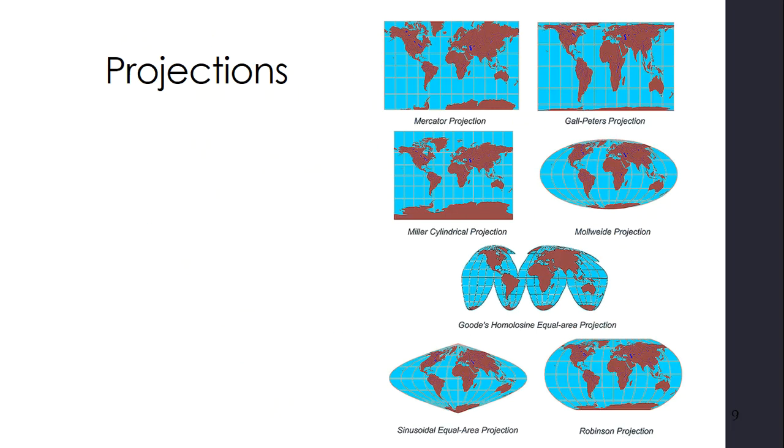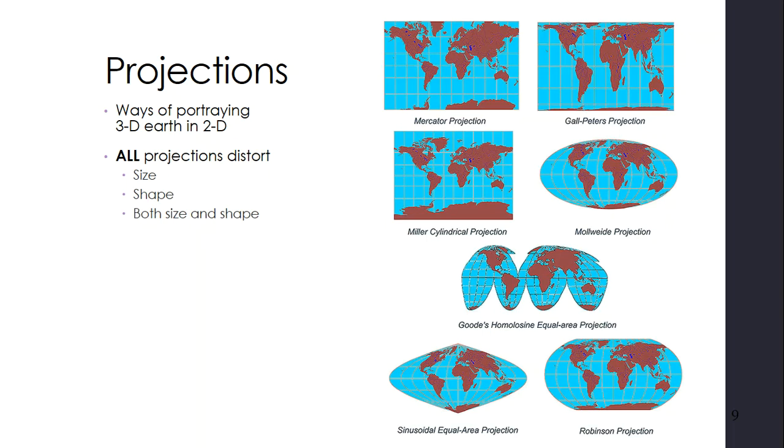Map projections, which the short video that you watched also talked about, are different ways that we take that three-dimensional sphere and look at it in two-dimensional space. So it's ways of portraying a three-dimensional Earth in two dimensions. And these things are going to be inherently flawed. All projections distort, every single one of them. Some distort size. Some distort shape. Some distort both size and shape. In fact, most distort both size and shape to some degree.